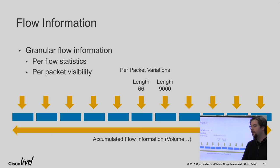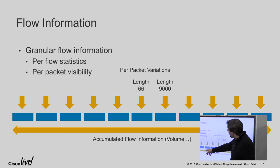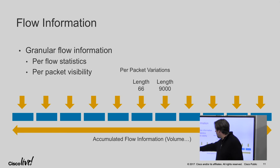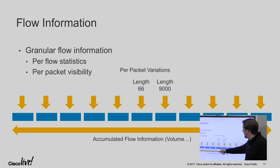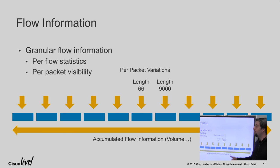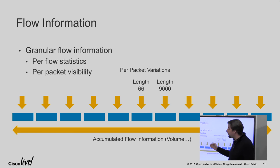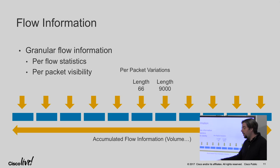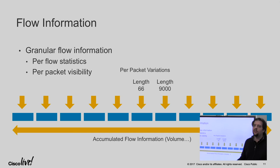So if all those packets were 66 bytes and then I have one packet going up to 9,000, that would flag it — I know that all the packets were working fine up to that point, then I got a 9,000-byte packet. Is it normal? Is it not normal? You can do the analysis, but at least you know.